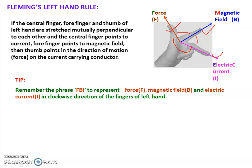Fleming's Left Hand Rule is used to identify the force experienced by a current-carrying conductor in a magnetic field.